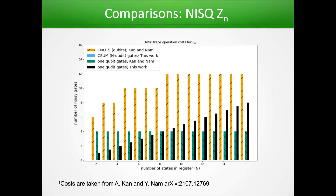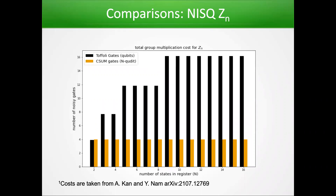If we look at a comparison — I've taken results from this paper in terms of a fault-tolerant perspective on gate costs — we can see that the CNOT count for a qubit encoding scales logarithmically, but the entangling gate operations for qudits are constant with the dimension of the Hilbert space. This is really encouraging for a NISQ-era algorithm, that we don't have this increase in gate cost. Similarly, for multiplication operations, the number of Toffoli gates for qubits scales logarithmically, but we don't need Toffoli gates at all — all we need is the controlled-sum to do a multiplication operation.